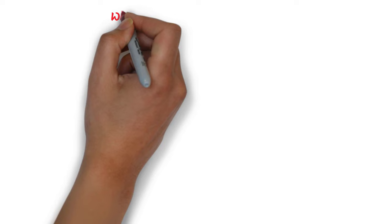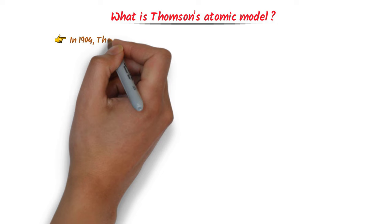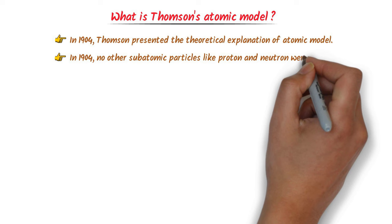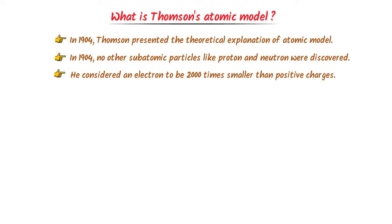Now, what is Thomson's atomic model? To learn Thomson's atomic model, remember these important points. In 1904, Thomson presented the theoretical explanation of his atomic model. At that time, no other subatomic particles like protons and neutrons had been discovered. He considered an electron to be 2,000 times smaller than the positively charged particles.